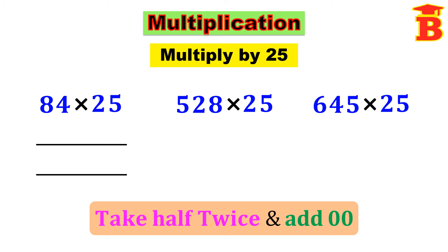So now we can multiply 84 into 25 using this shortcut technique. Take half twice, then add double 0. Taking half of 84 we get 42. Again take half of 42, we get 21. Then add double 0 at the back. So the answer is 2100.